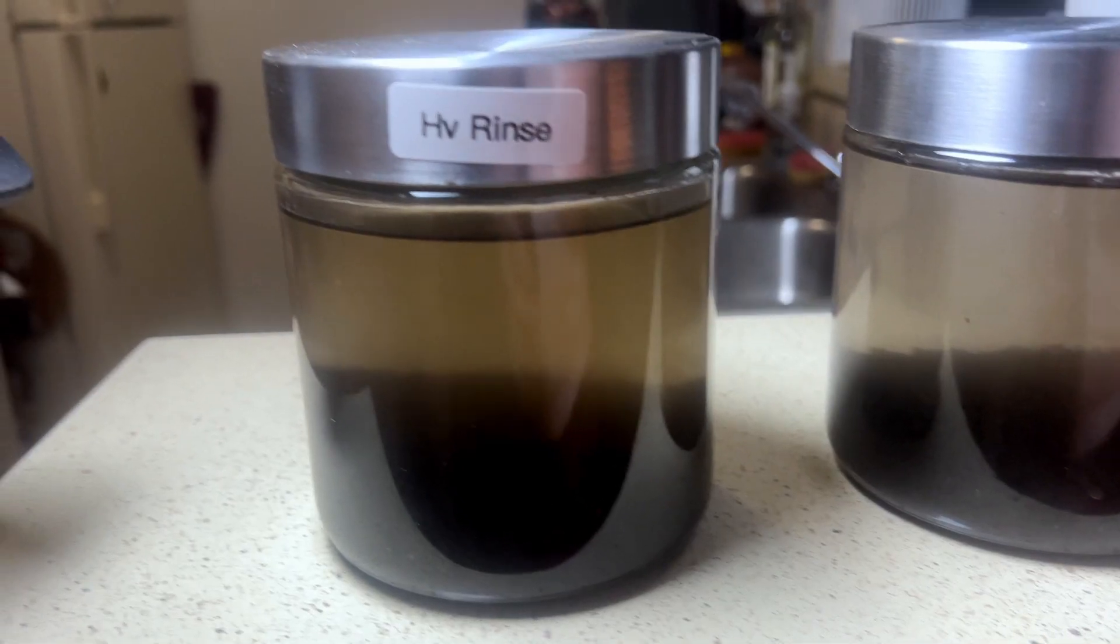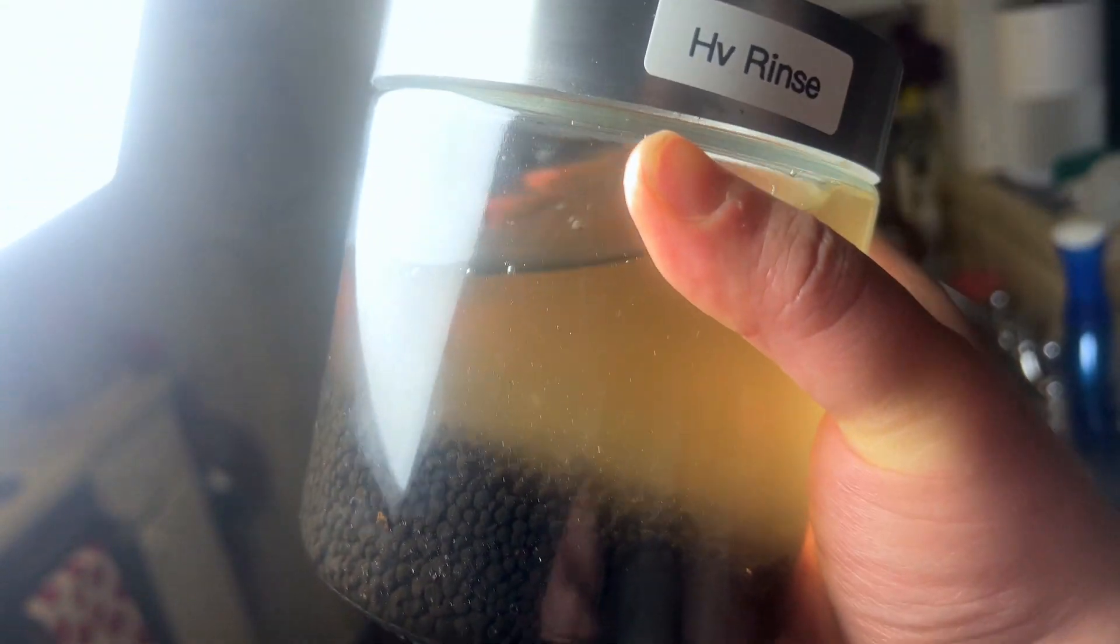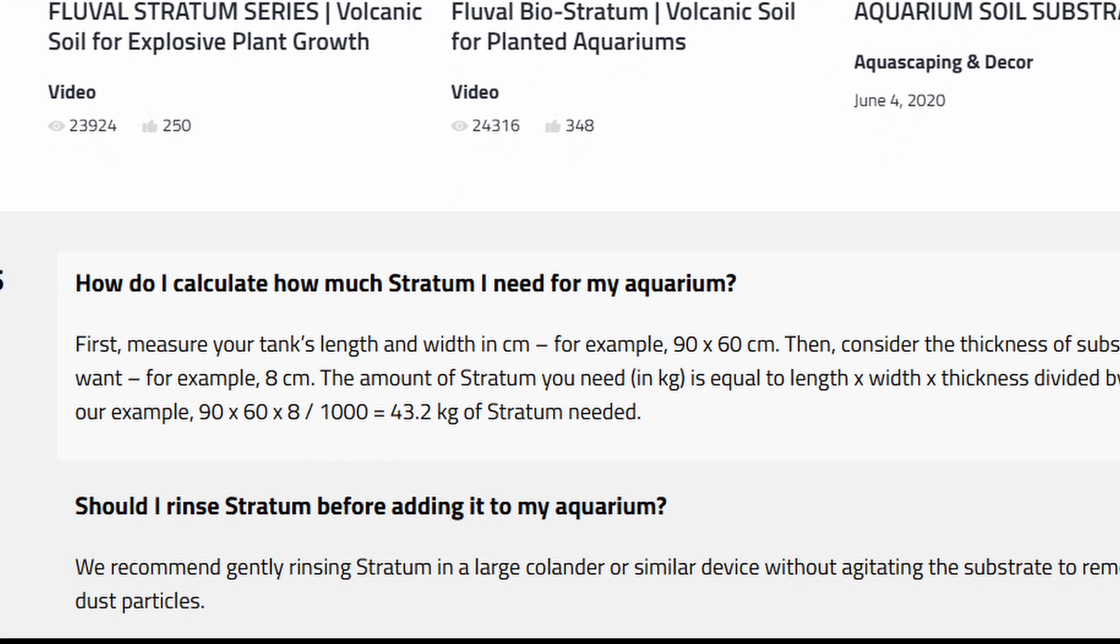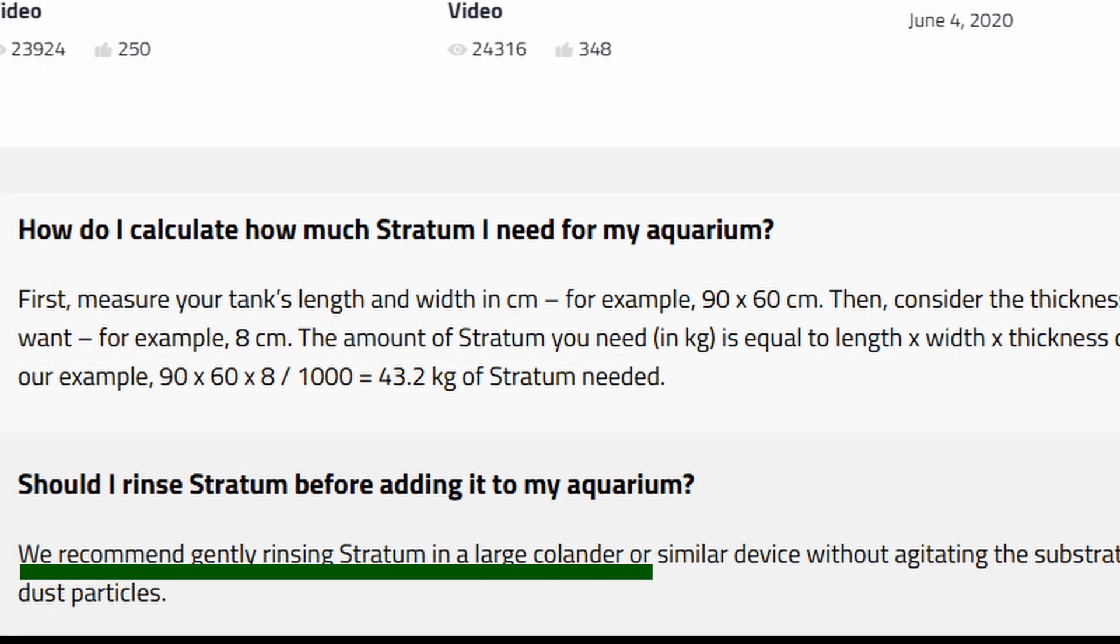The heavy rinse jar was a mess for the entire first day, with the most clouding by far. While it cleared significantly overnight there was a noticeable haze still remaining. What's frustrating is that Fluval's website actually recommends rinsing, yet even light rinsing caused more cloudiness than skipping it altogether.